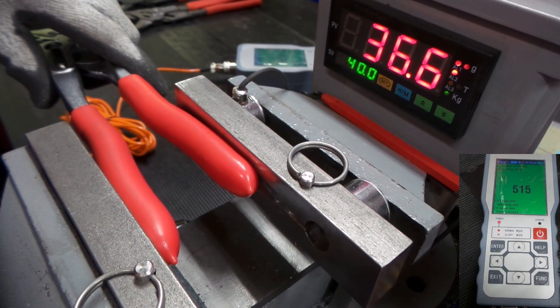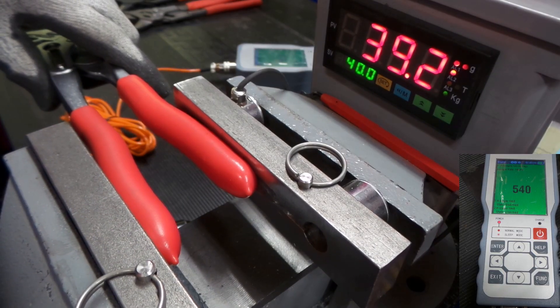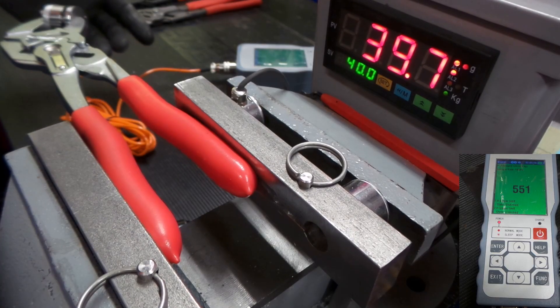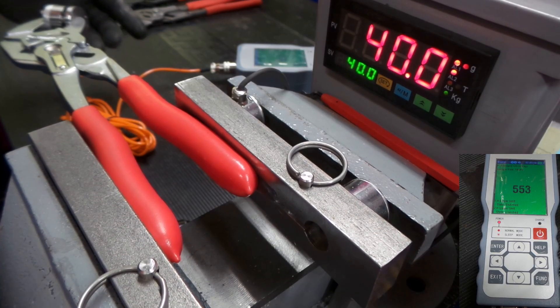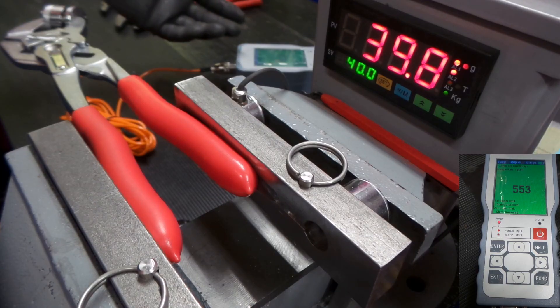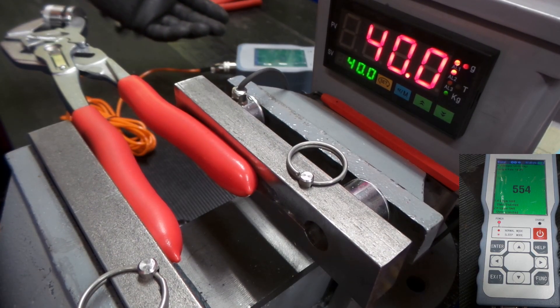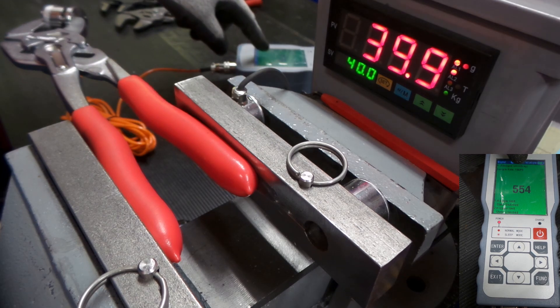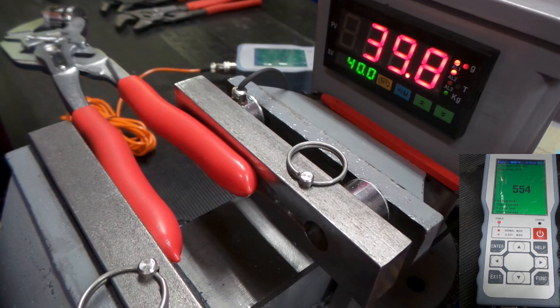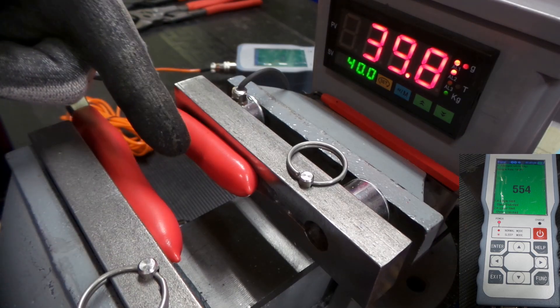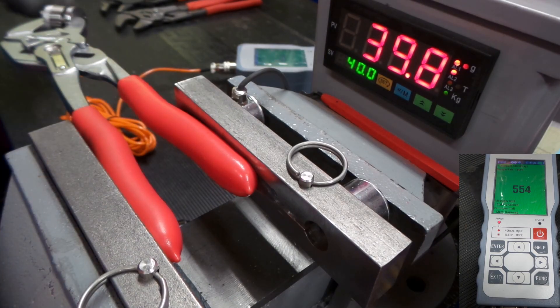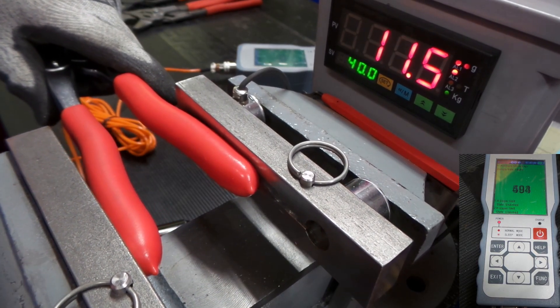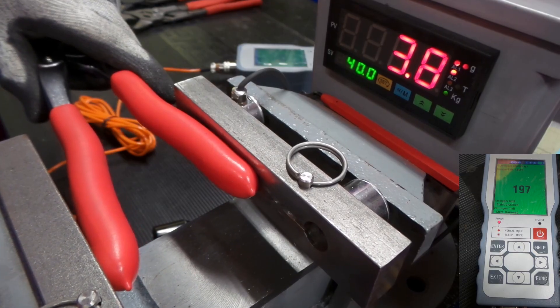40 grams gets us about 550 grams of force, and we're going to go back and check the other two pliers wrenches.